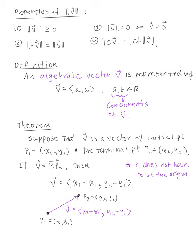Here's the next theorem. Suppose V is a vector with initial point P1 and terminal point P2. If vector V connects P1 and P2, then vector V is given by x2 minus x1 comma y2 minus y1. Note that P1 does not necessarily have to be at the origin.